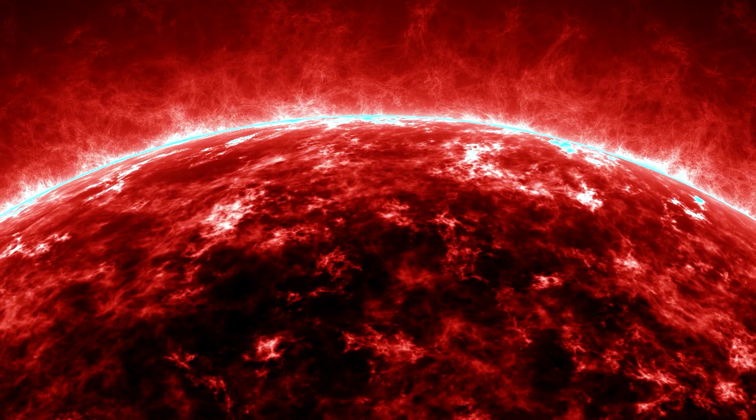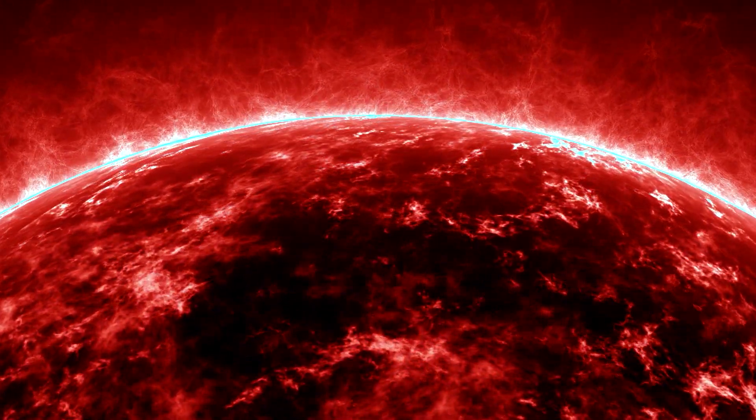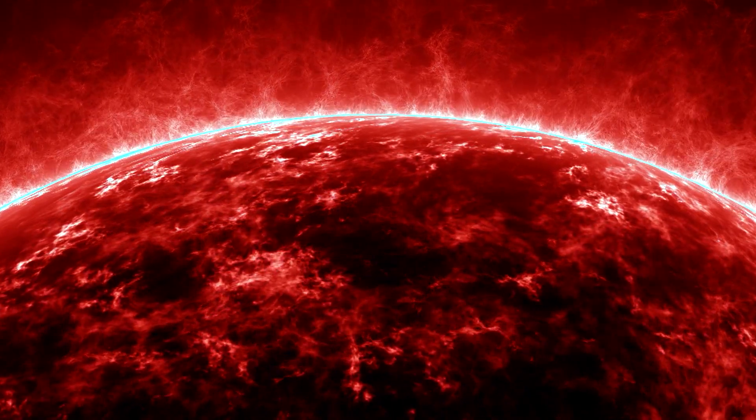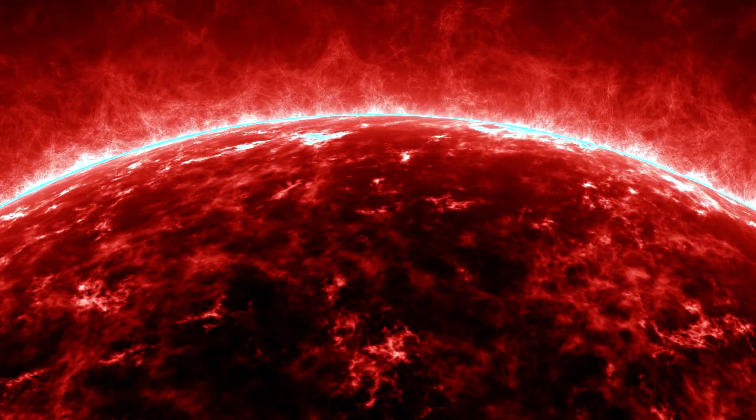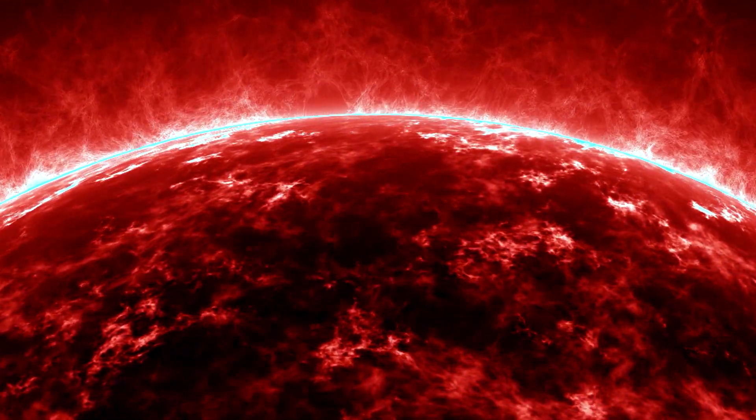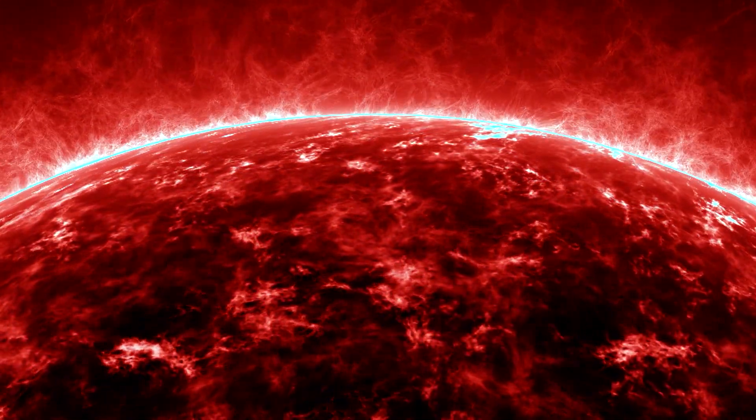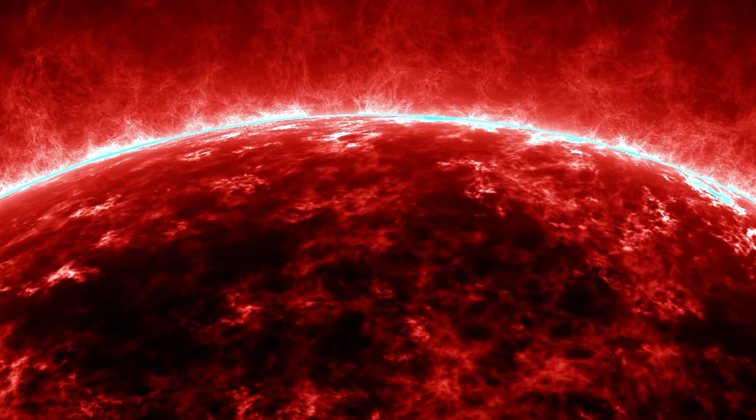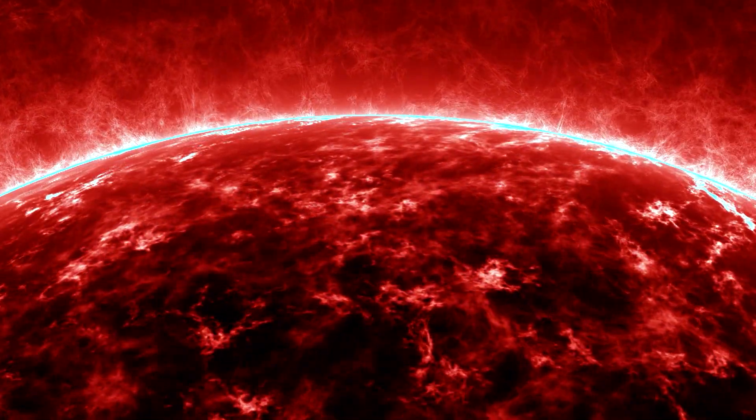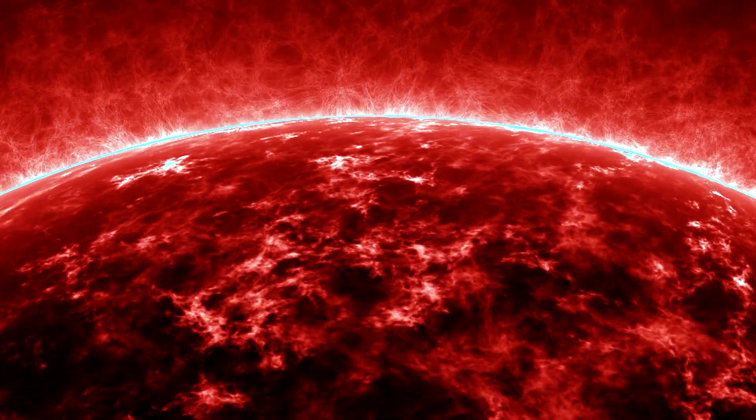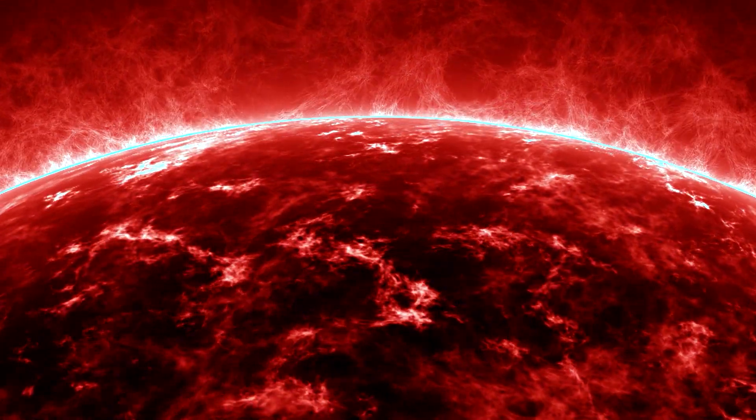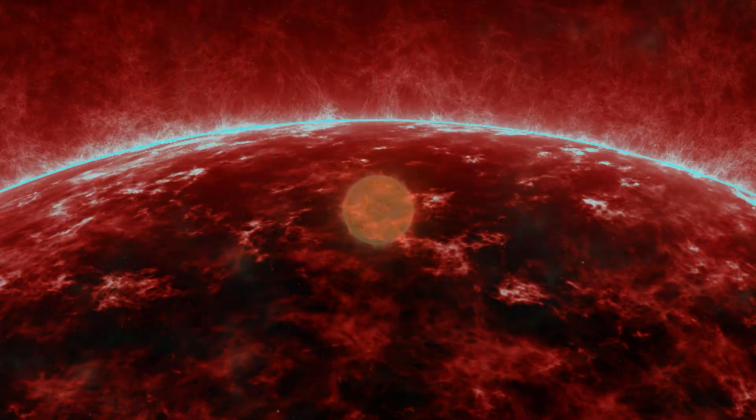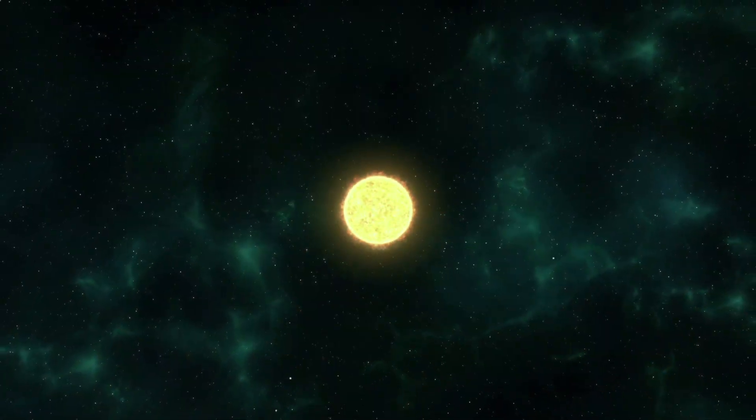Once a massive star has burned through all of its hydrogen fuel via nuclear fusion and only has helium left, it cools down and expands, in the same way that red giants do. However, since this star is much larger than an average-sized star, it becomes a red supergiant instead. The supergiant phase lasts for a few million years as the star starts using up the remaining helium in its core instead. This is where things get explosive.